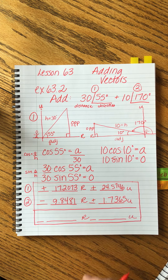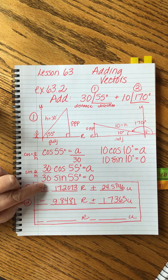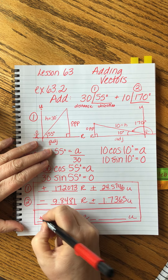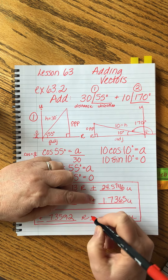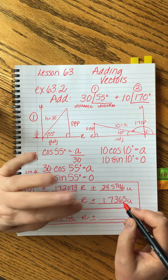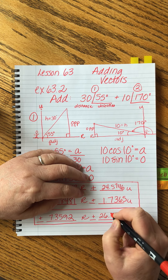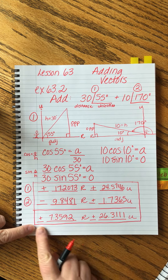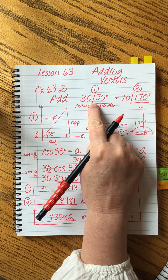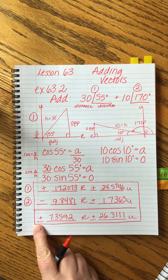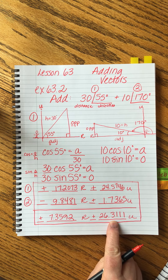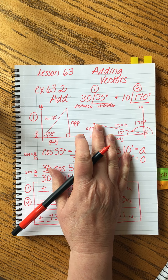The last step is probably the easiest: just make the addition. Sometimes we're adding negative numbers, so we have to be careful. When we combine these two vectors, we get a solution of positive 7.3592 for the right value. Both up values are positive, so we add them — you really have to think about what you're doing. This calculation is one we'll do over and over again.